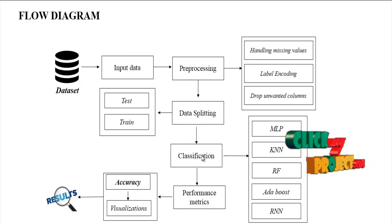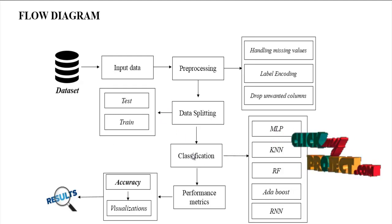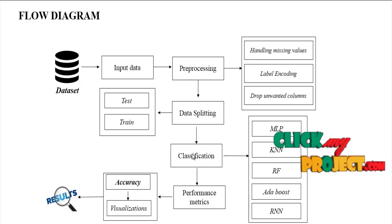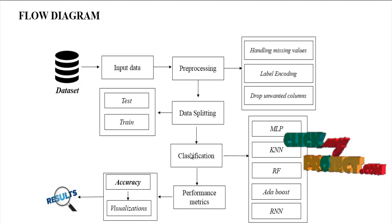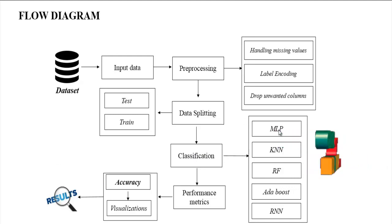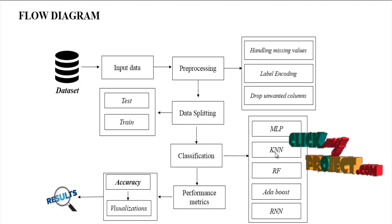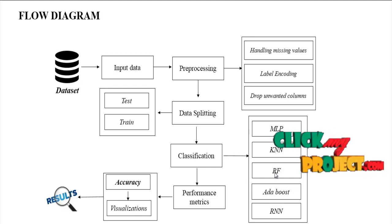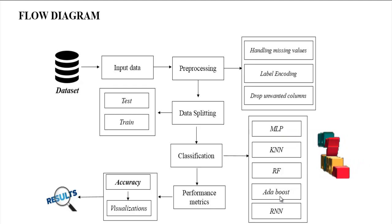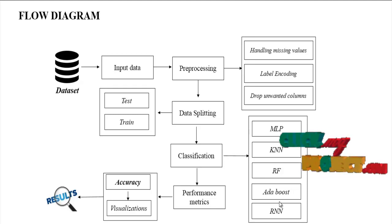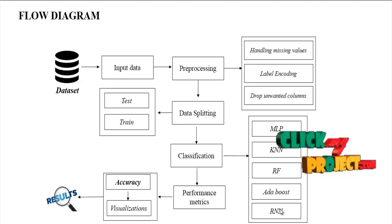After that, we implement the classification algorithms — both machine learning and deep learning. In machine learning, we implement four algorithms: MLP (Multi-Layer Perceptron), KNN (K-Nearest Neighbor), Random Forest, and AdaBoost. Then the one deep learning algorithm is RNN.